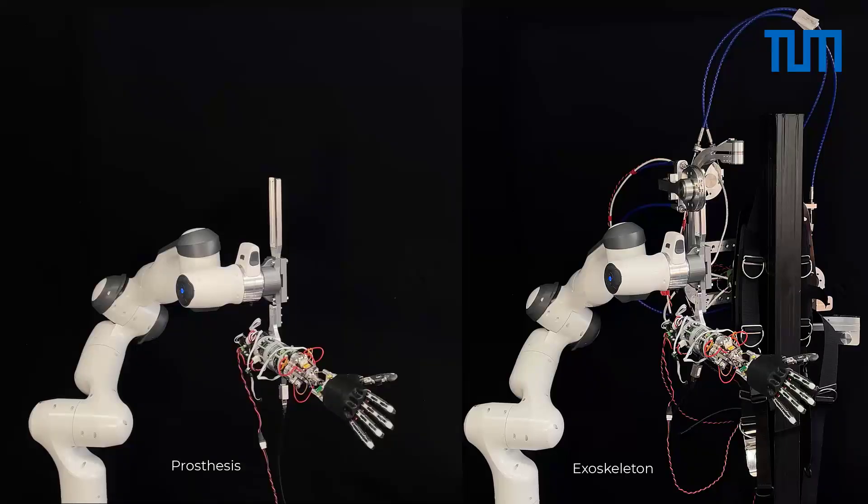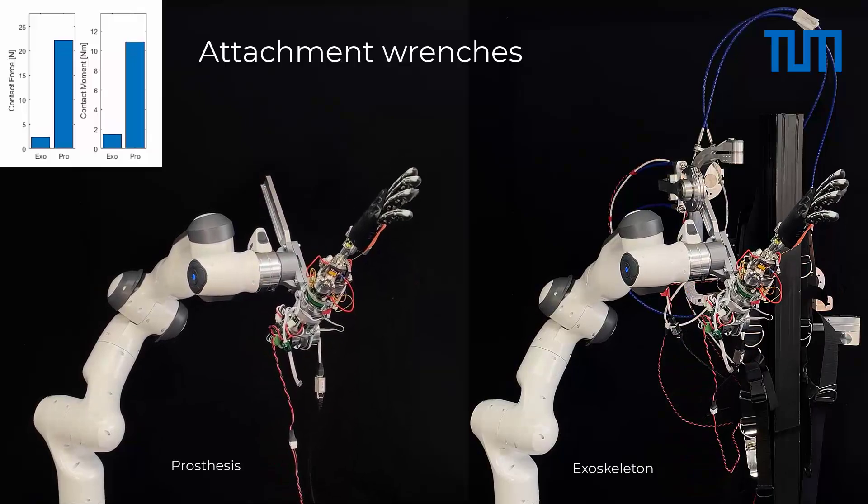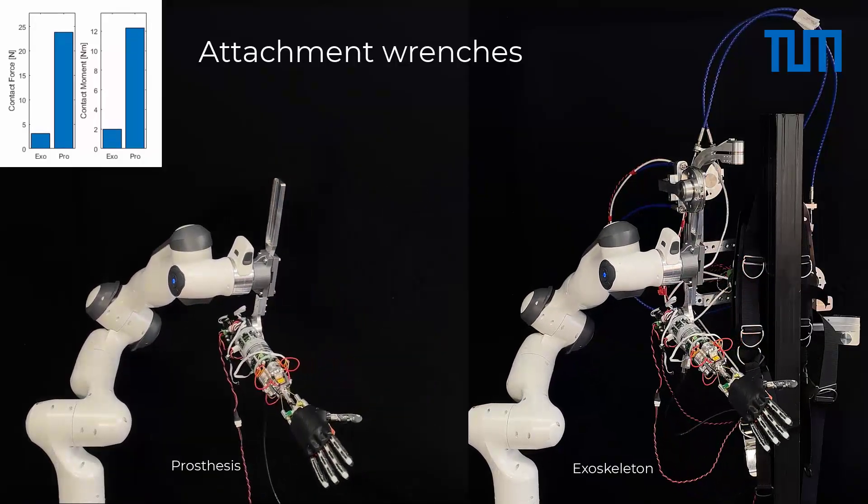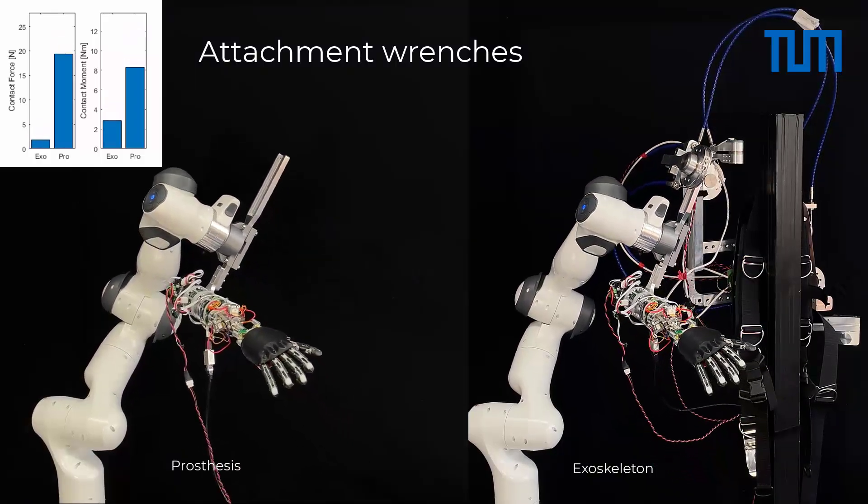The robot applies a trajectory of a virtual residual limb and allows a measurement of forces and moments in the attachment point. It reveals that forces and moments at the residual limb can be drastically reduced when using the exoskeleton.